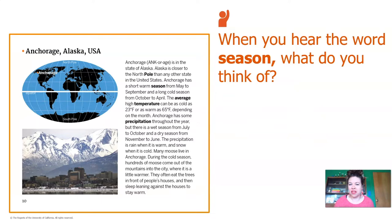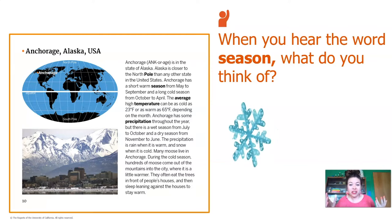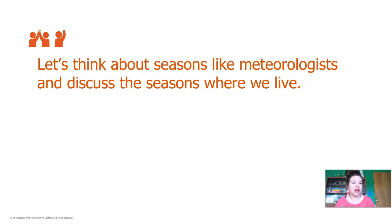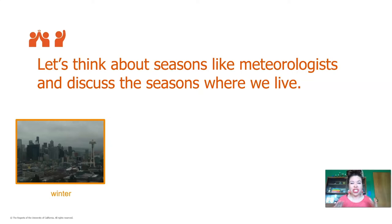When you hear the word season, what do you think of? Maybe you think about the way seasons change in the place where you live. I think about winter — maybe during the winter season there might be snow, but you wouldn't see that in the summer, and also leaves changing in the fall. Let's think about seasons like meteorologists and discuss the seasons where we live. I live in Seattle, Washington, and in winter it's chilly and kind of cold, but not freezing cold. You're not going to see a blizzard or below-freezing temperatures every day. It's pretty cold but mostly really rainy. What is the winter like where you live?